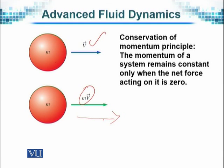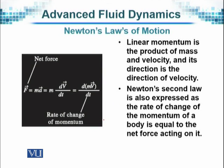But the momentum of a system, that is this system, for example if we are considering this, will remain constant if the net force acting on it is zero. The linear momentum is a product of mass and velocity as we have said and its direction is direction of velocity.